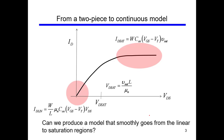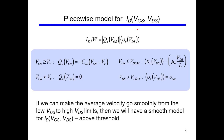Looking at ID versus VDS, the goal is to connect the linear region and the saturation region smoothly. We want a model that can bridge these two regions, and that model is called the virtual source model. We will not exactly derive it, but we will see some important intermediate formulas and then go to the conclusion.